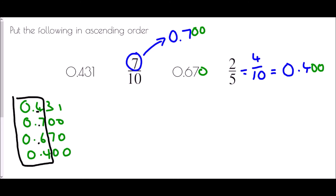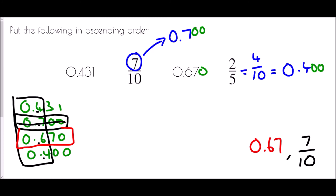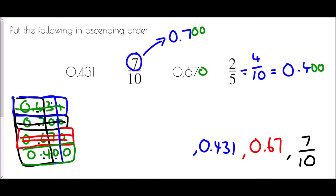With 0.7 identified as largest, the remaining first digits are 4, 6, and 4. So the next biggest is 0.670, which is 0.67. Both remaining numbers start with 4, so I check the next digit: 3 versus 0. Therefore 0.431 is next, and 0.400 (two-fifths) is the smallest. In ascending order: two-fifths, 0.431, 0.67, and seven-tenths.